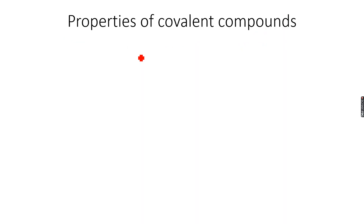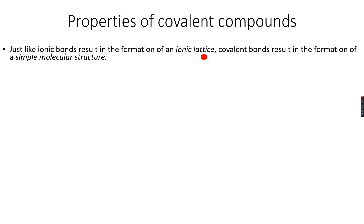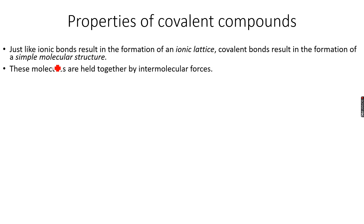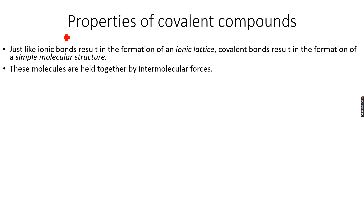Just like ionic bonds result in the formation of an ionic lattice, covalent bonds result in the formation of a simple molecular structure. In a simple molecular structure, we are more interested in intermolecular forces like hydrogen bonds and van der Waals forces rather than covalent bonds.